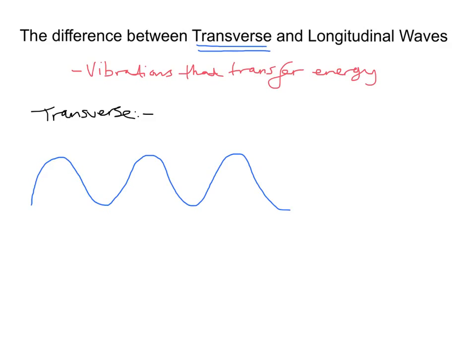Transverse waves are waves in which the vibrations are at right angles to the direction of travel. So in this example, the vibrations occur in this direction. So I'll just put there, vibrations. But the actual direction of travel is this way. So the vibrations occur at 90 degrees to the actual direction that the vibrations are happening.